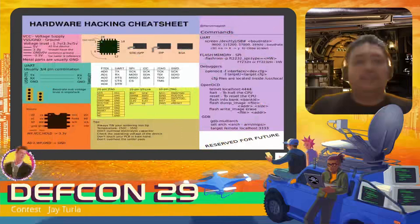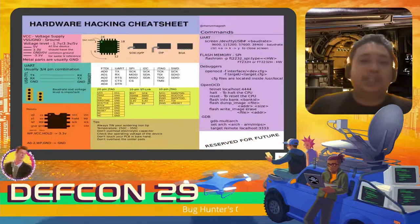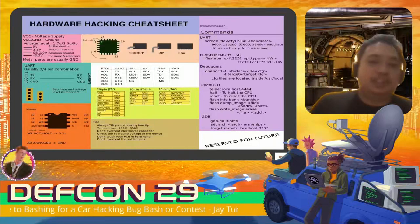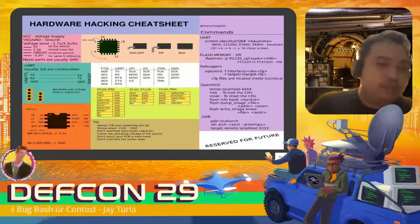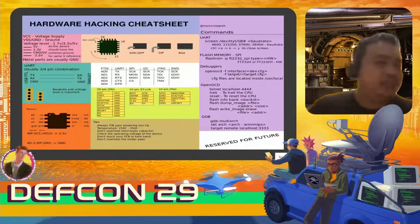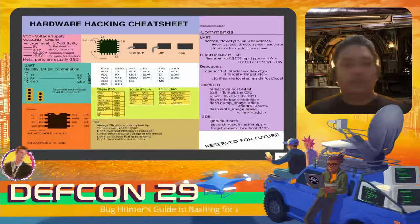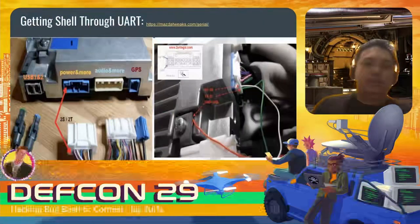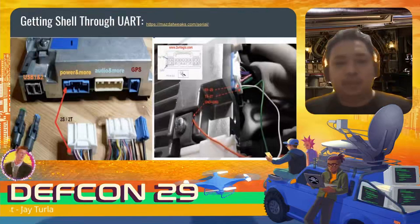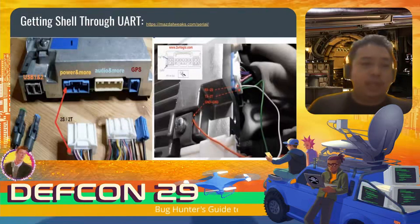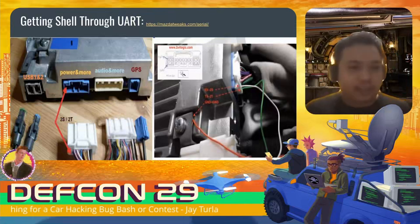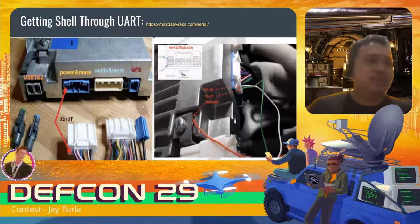There's also a good hardware hacking cheat sheet by M. Aaron Magish - great for hardware hackers at bug bashes where hardware is given to you to play with, so fire up your hardware hacking tools. There's also a guide for getting a shell on the Mazda infotainment system showing where to place RX, TX, and ground for UART. Most infotainment systems have UART or other hardware interfaces you can interact with.